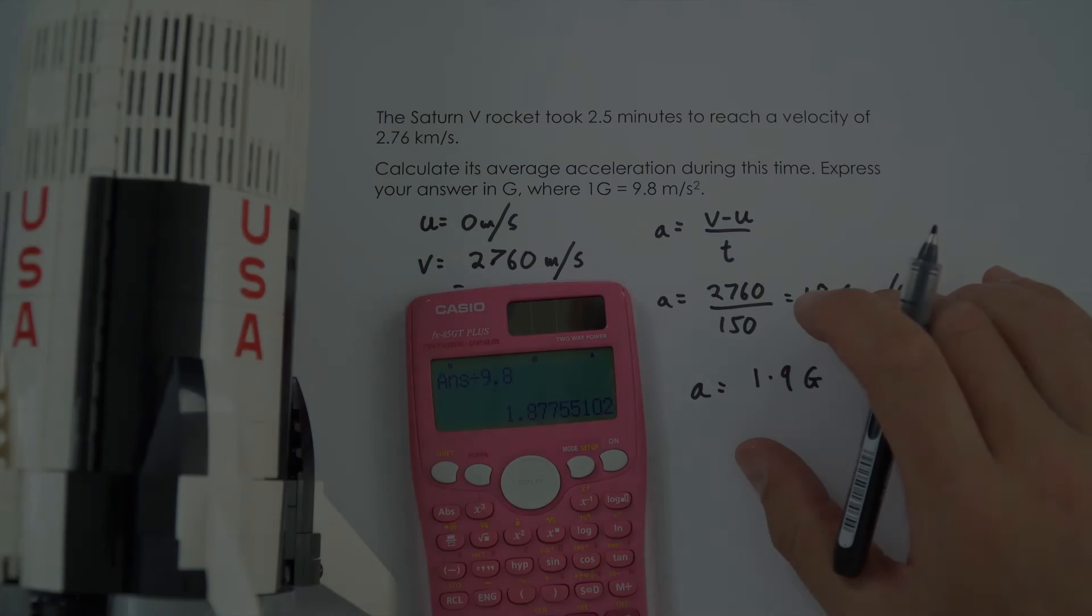Guidance is internal. 12, 11, 10, 9, ignition sequence start, 6, 5, 4, 3, 2, 1, 0, all engines running. Liftoff, we have a liftoff, 32 minutes past the hour.